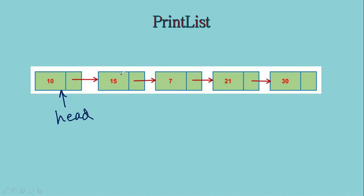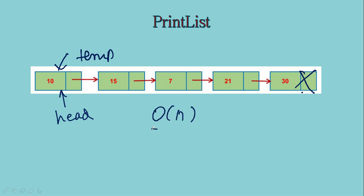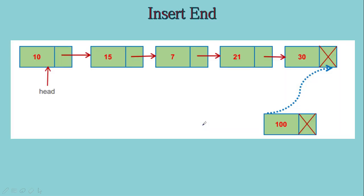Next is the print list operation. Here what you will be doing: you will have a temporary pointer initialized to the first node, print the data part, move to the next node, and so on — printing till the end of the list. You will be traversing through the entire list, so the time complexity will be big O of N.